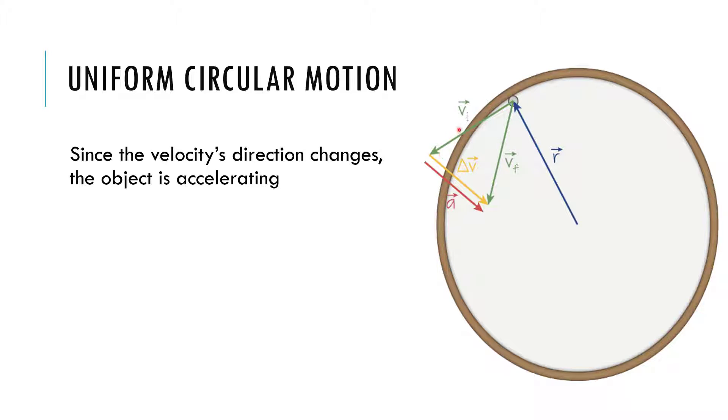It was like down, a little bit down, and a lot to the left. And then it became a lot down and a little to the left. So the change is this. The acceleration is going to be in the same direction as the change in velocity. So my acceleration points this way.